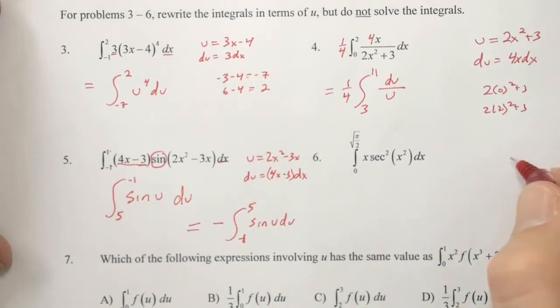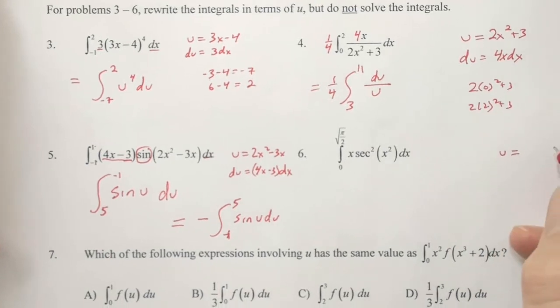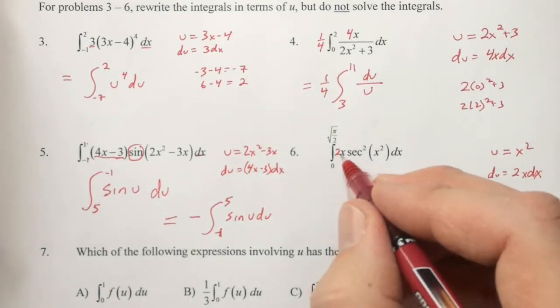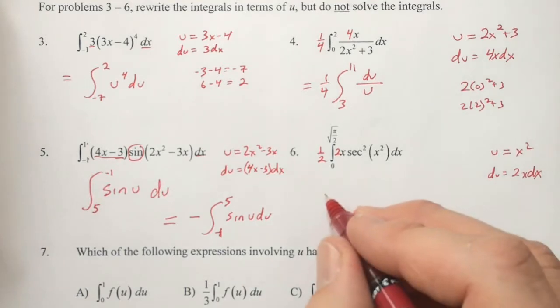With number 6, u is going to be equal to x squared, which makes du equal to 2x dx. We have the x and the dx, we need the 2, and therefore the 1/2 out front.